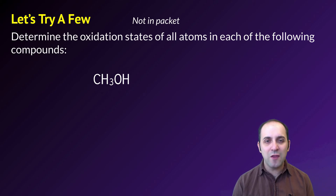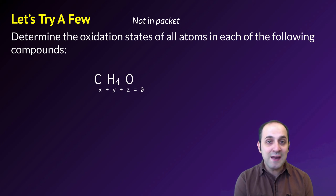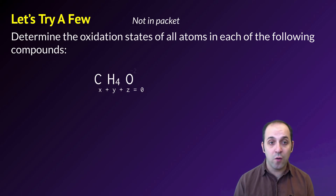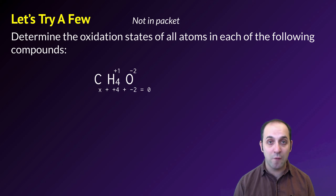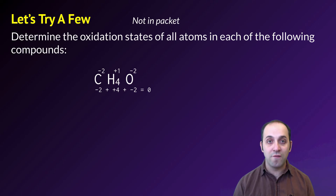CH₃OH is all non-metals, which makes things a little trickier, but still totally doable. I've grouped all of the atoms by themselves: C plus H₄ plus O, and that has to add up to zero. Oxygen is negative two, and there's one oxygen, so that's a total of negative two. Carbon is more electronegative than hydrogen, so carbon is going to be negative and hydrogen is going to be positive. Hydrogen has to be plus one — that's the only positive oxidation state we can give it — so four hydrogens give a total of positive four. Summing those together, we determine that carbon in this case is negative two, which brings the overall compound to zero.